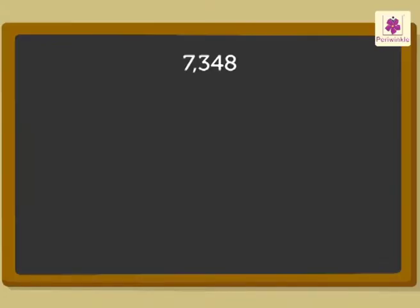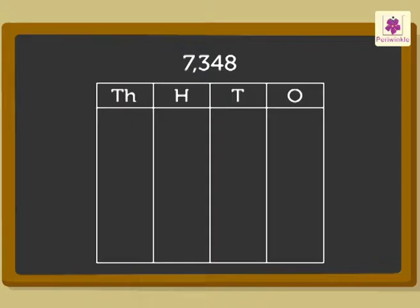Look at the number 7348. Let us write the place value of each digit. The number 7348 has 7 thousands, 3 hundreds, 4 tens, and 8 ones.